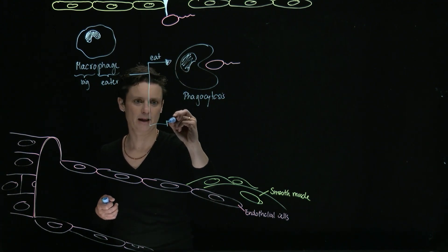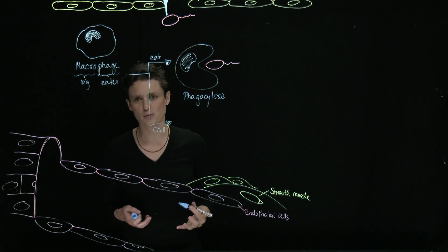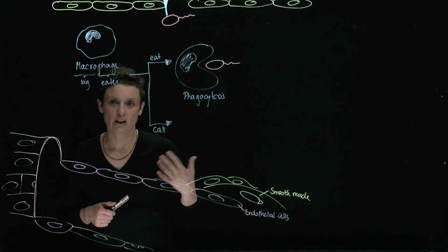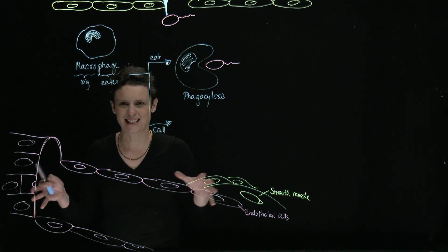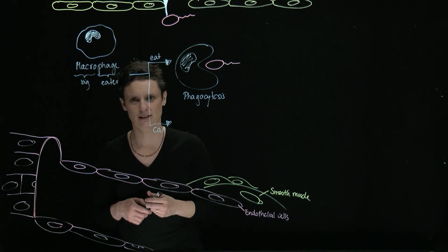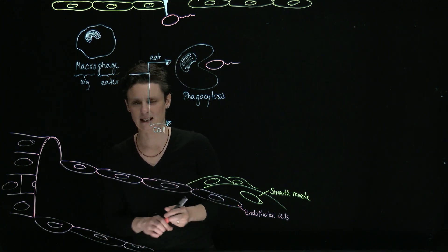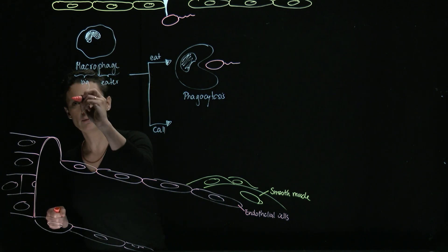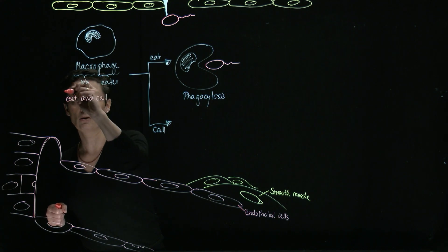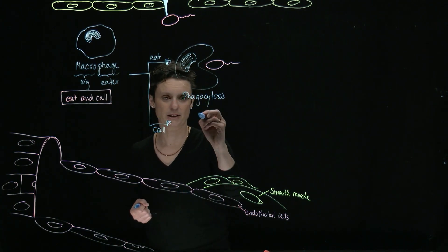The other thing that the macrophage is going to do is call for help. The macrophage is very important in recruiting other cells and making a good setup so that more cells can come to the site of infection and help clear the infection. Therefore, because the macrophage does these two things, eating and calling for help, we're going to give the macrophage a slogan: eat and call. So now the question is, how does it call for help?